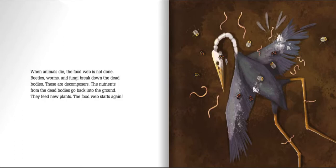When animals die, the food web is not done. Beetles, worms, and fungi break down the dead bodies — these are decomposers. The nutrients from the dead bodies go back into the ground. They feed new plants, and the food web starts again.